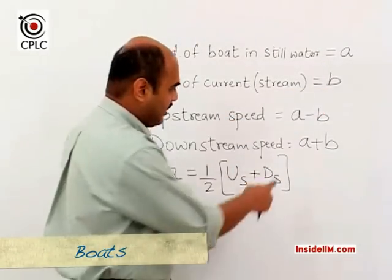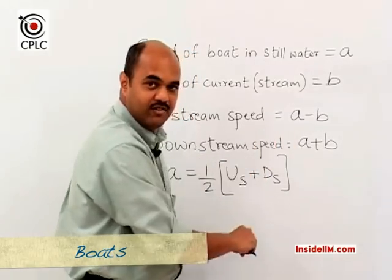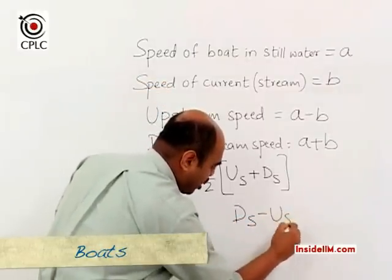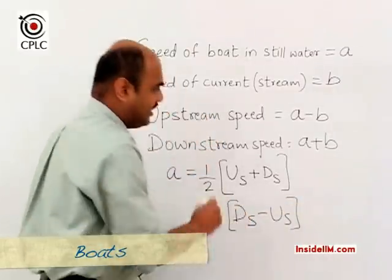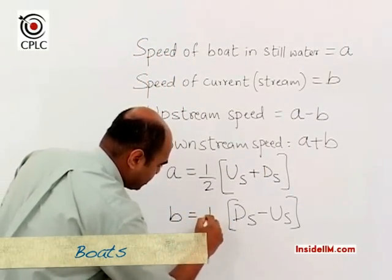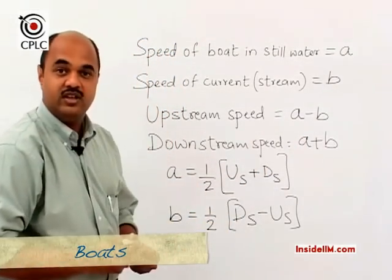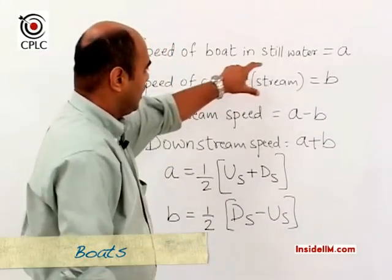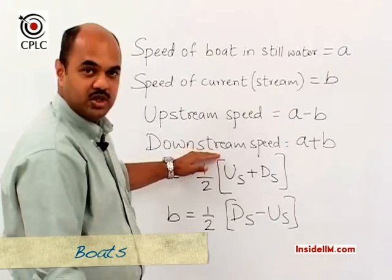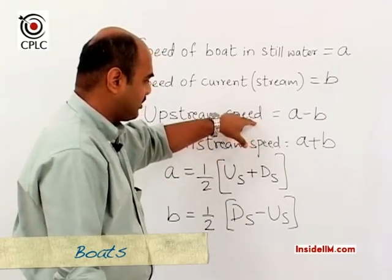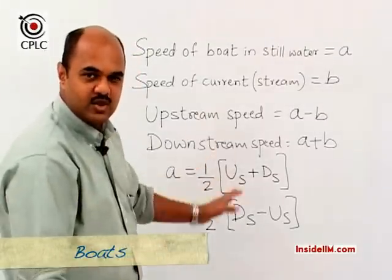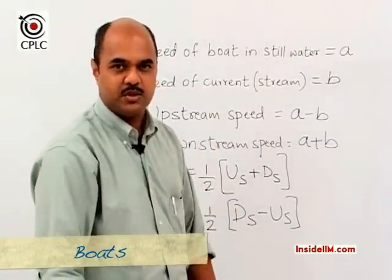If we want to find the speed of the current B, we look at the right-hand sides and subtract: downstream minus upstream gives 2B. Hence B equals half the difference of the two speeds. So if A and B are given, we find upstream and downstream speeds; if upstream and downstream speeds are given, we can find A and B. These boat questions are normally very simple to solve.